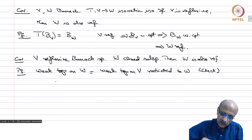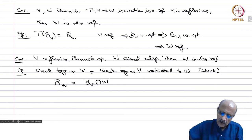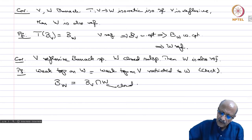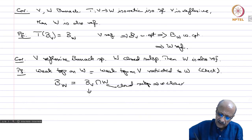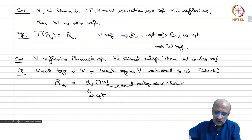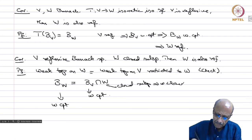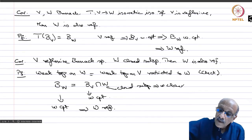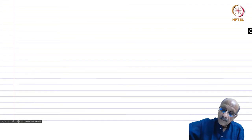The closed unit ball in W is nothing but the closed unit ball in V intersected with W. W is a closed subspace, so it is weakly closed, and BV is weakly compact. Therefore BW is also weakly compact, which implies W is reflexive.